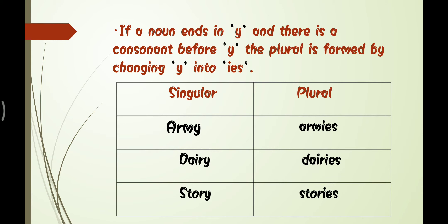Coming to the next rule: if a noun ends in Y and there is a consonant before the Y, the plural is formed by changing Y into IES. Many words end with Y, such as army, dairy, and story.